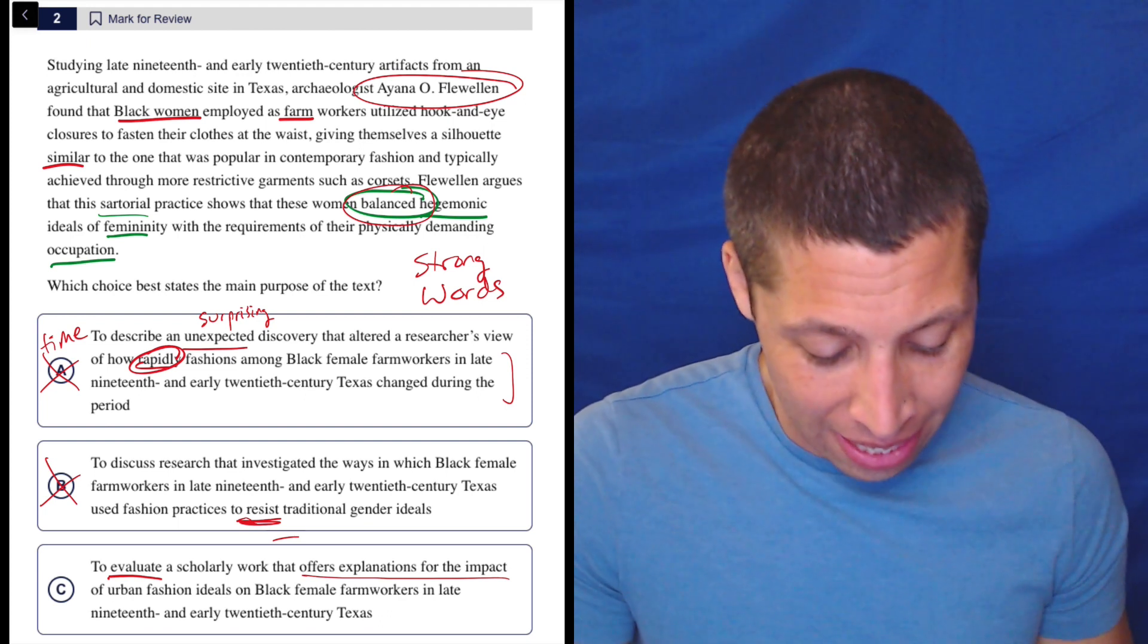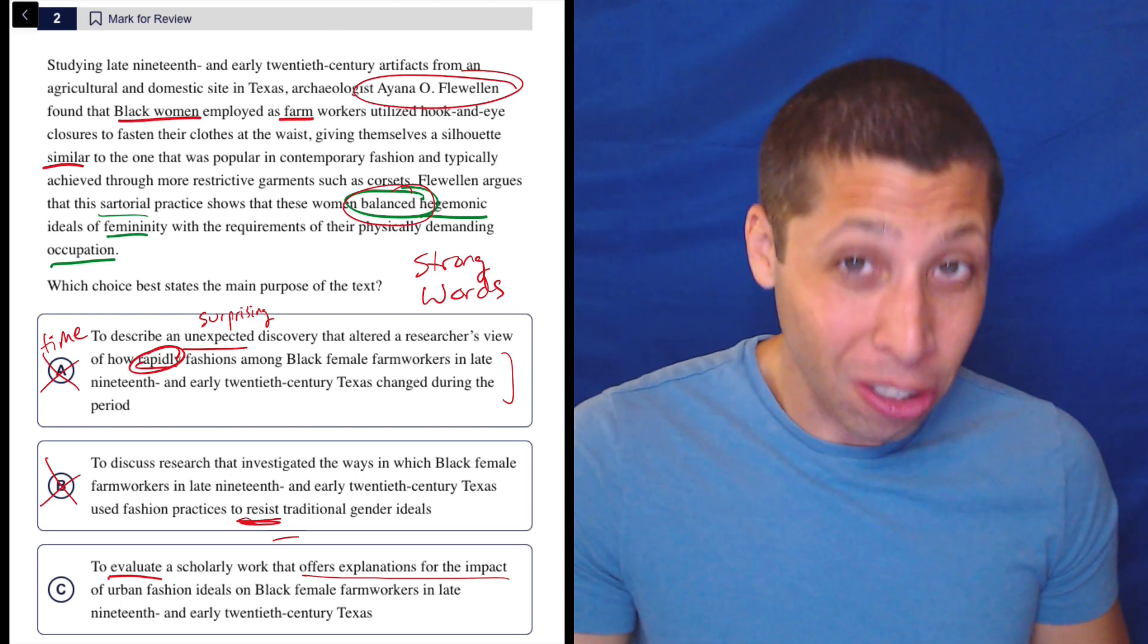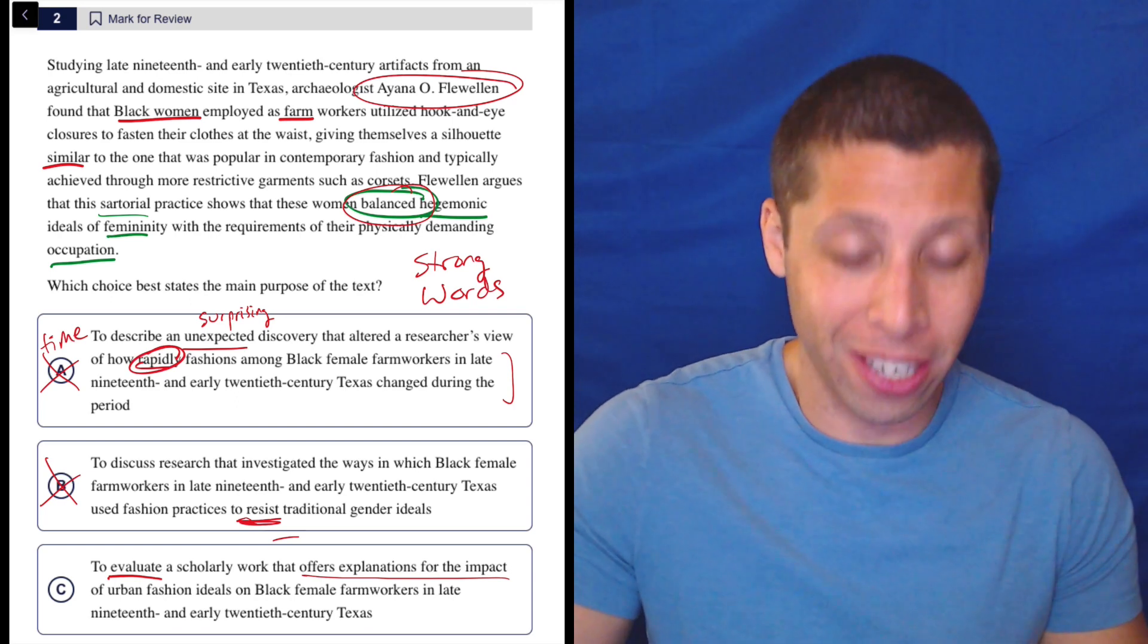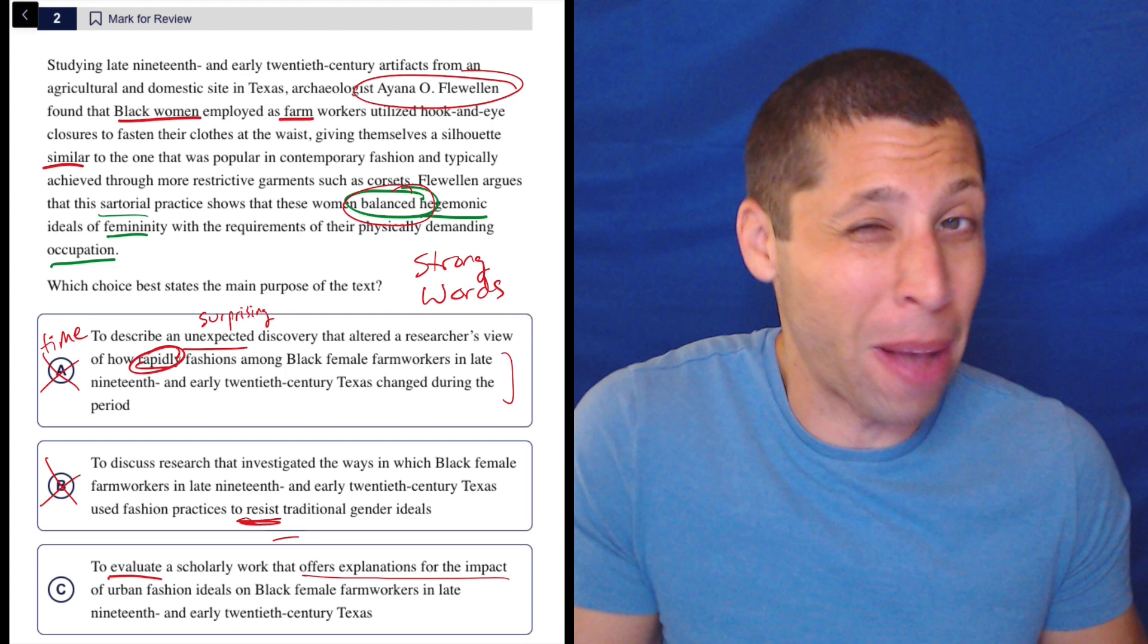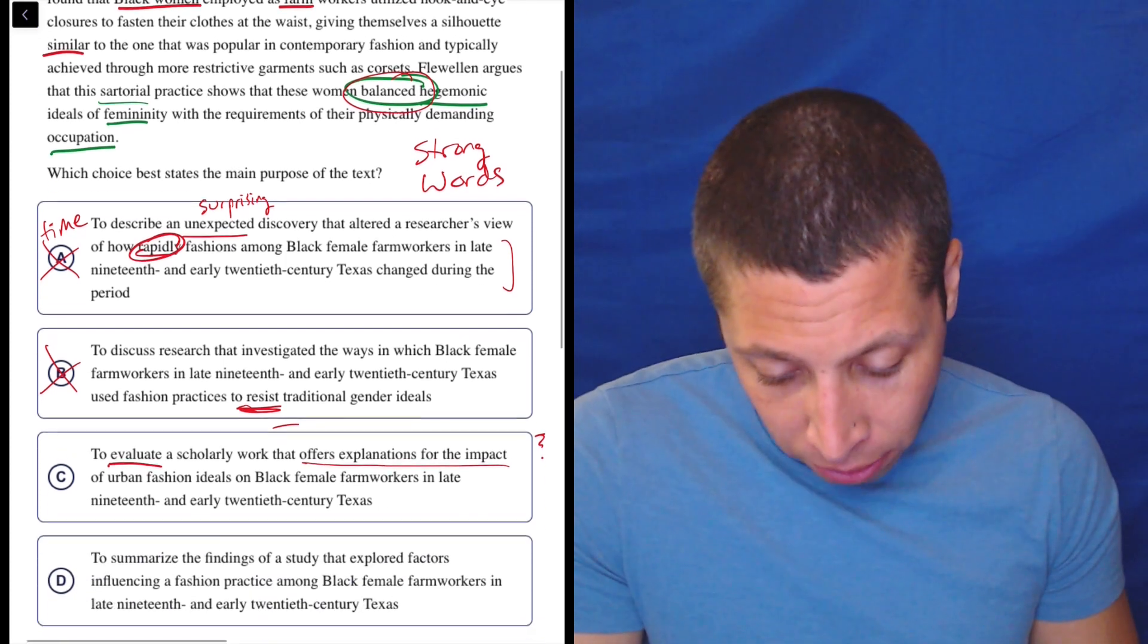Maybe that's the explanation is that the impact was that they wore these certain clothes. The explanation is that they were trying to balance things. I'm genuinely confused by this choice. So I would have to look at D. I don't know.